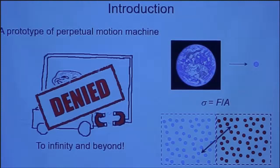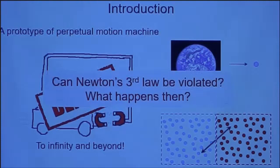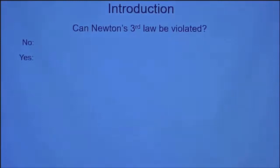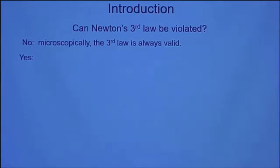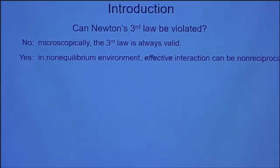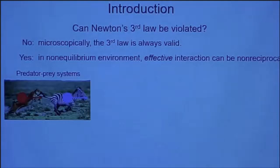Considering the importance of the third law, one may ask: can it be violated? And if so, what can happen? A quick answer is yes and no. At a microscopic level, the third law is always valid because it's guaranteed by the translational invariance of physical law. However, in a non-equilibrium environment, the effective interaction between objects can be non-reciprocal. A good example is the predator-prey system. The zebra is trying to escape from the lion, so it's effectively repelled by it, while the lion is trying to catch the zebra, so it's effectively attracted. Altogether, the lion, the zebra, and the ground satisfy Newton's third law, but if we only look at the lion-zebra subsystem, the interaction between the two objects is non-reciprocal.